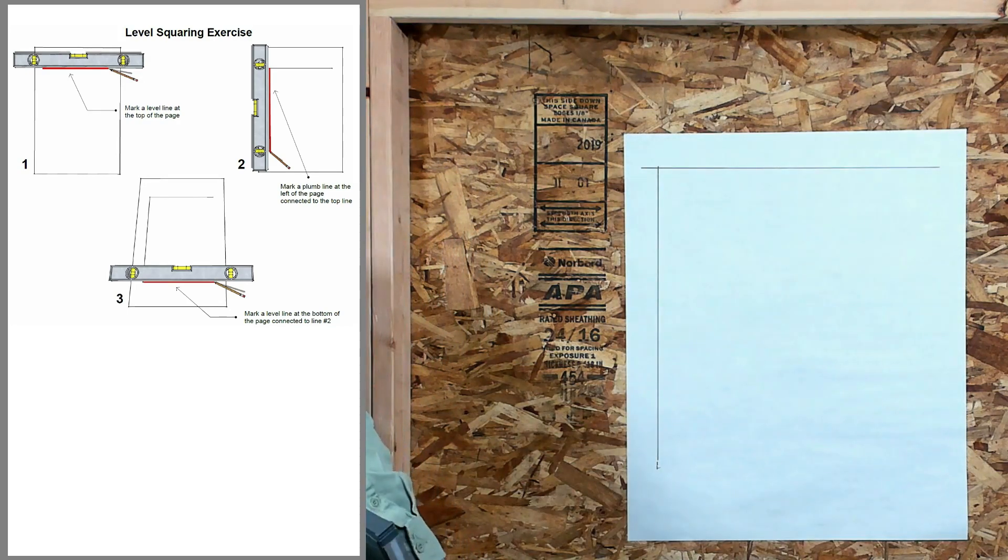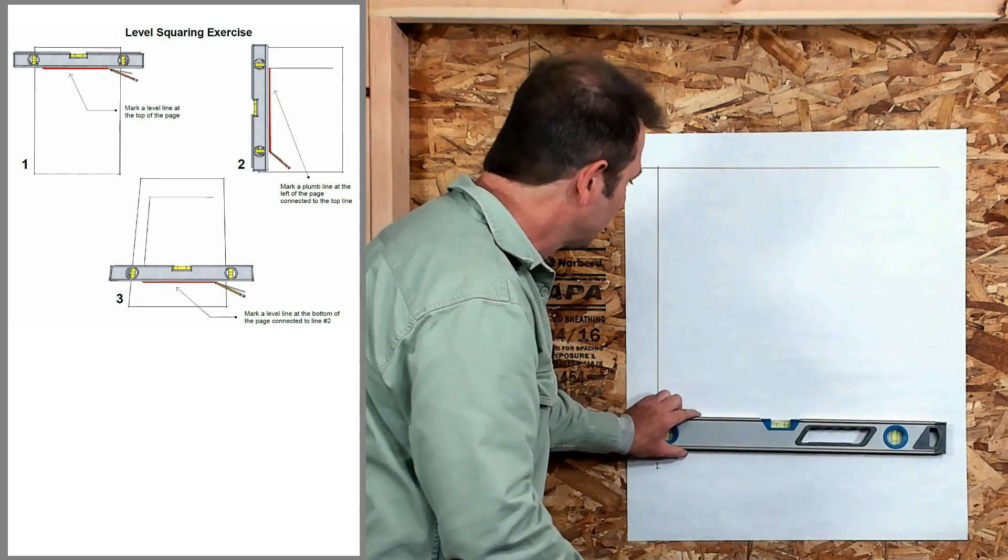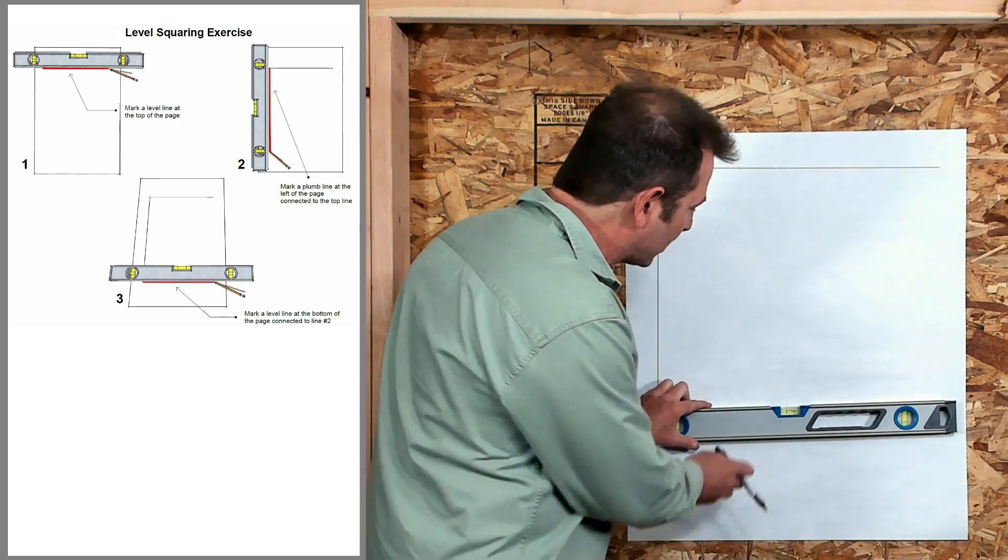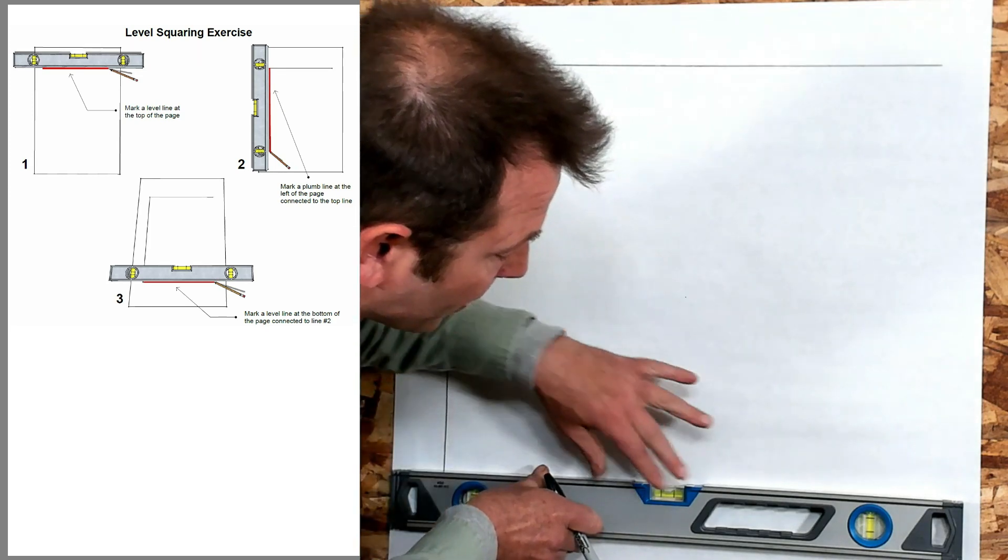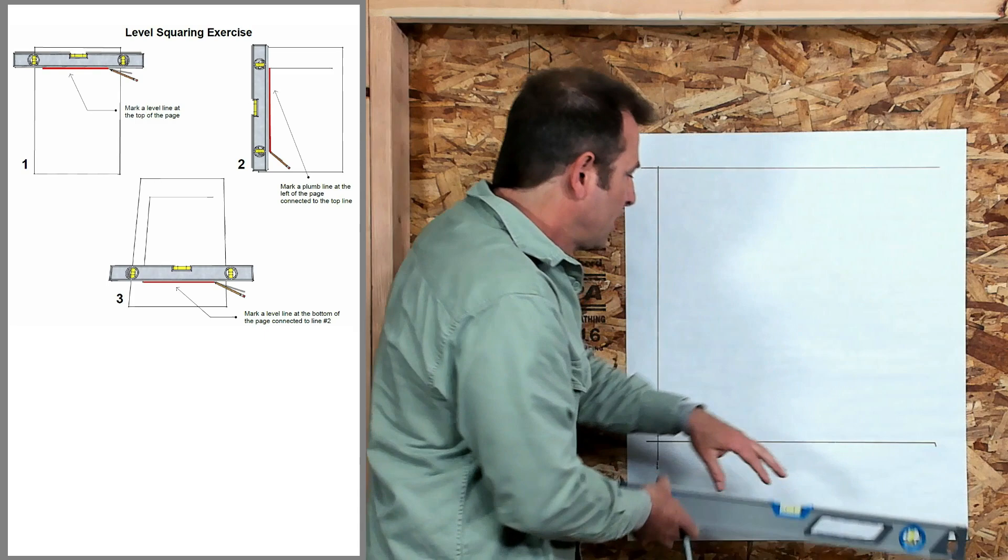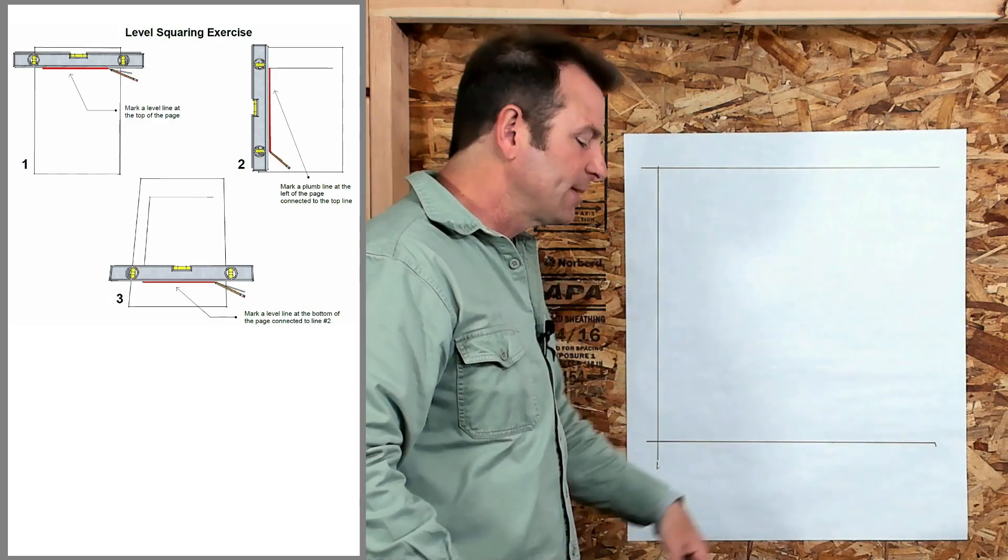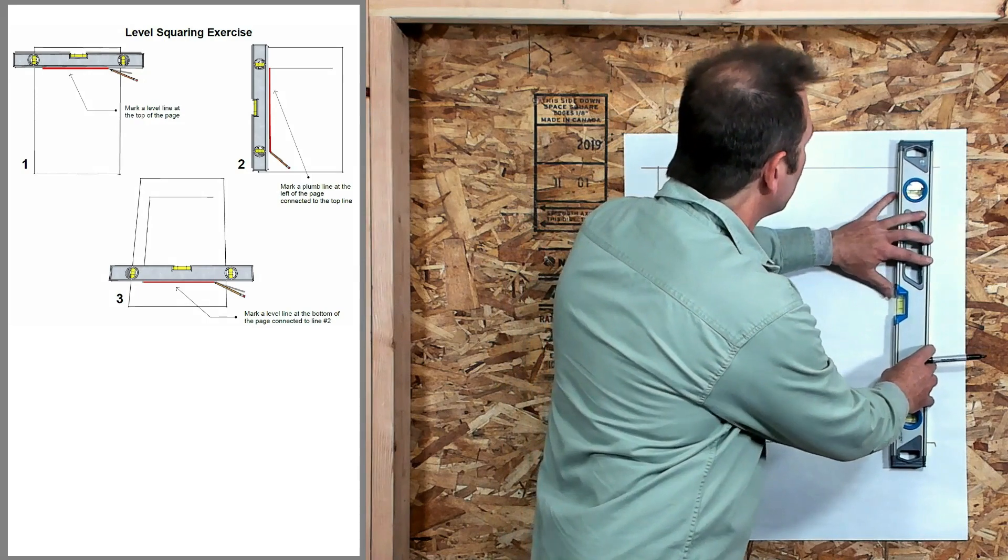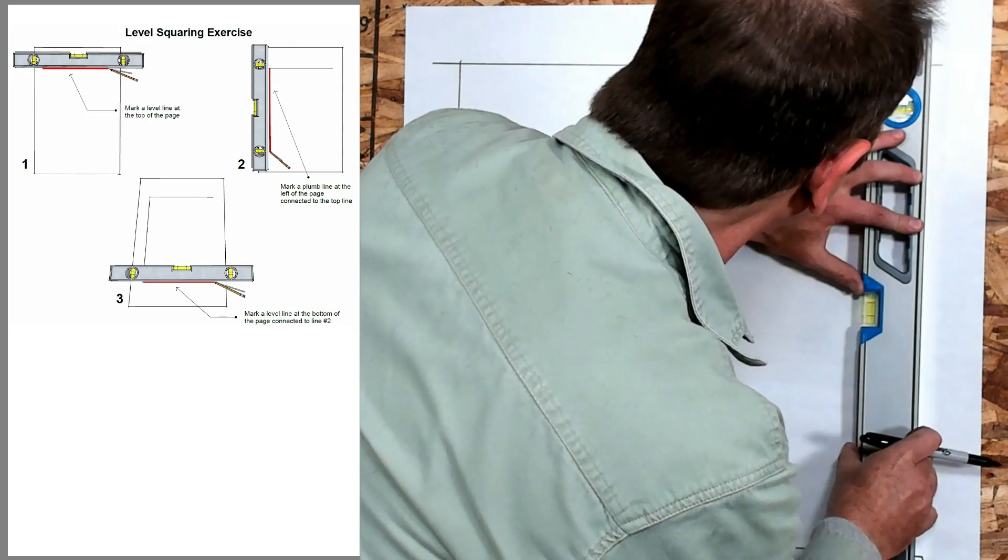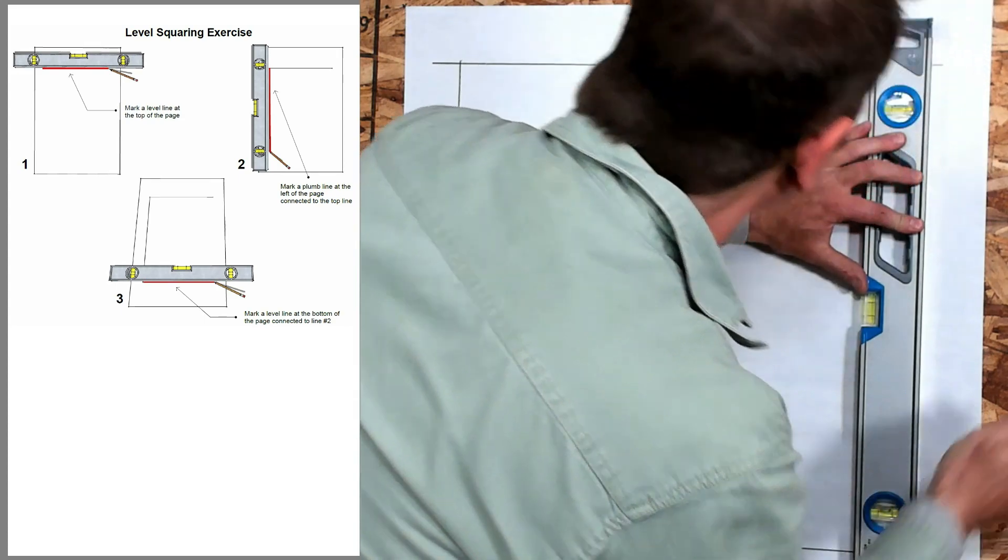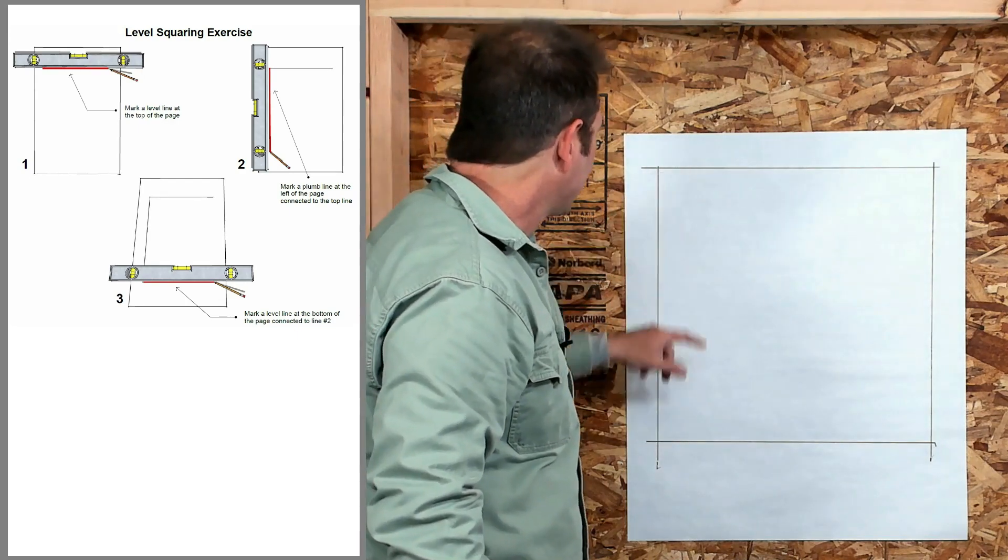Our next step is to create this bottom line. We also want that level, so I'm going to lay this on here and set my level at a place that keeps that bubble perfectly in the center. I'll mark that line. There's my third line. I have one more side to mark here. I'm going to line up my bubble, center it, double check it, and then mark my line.